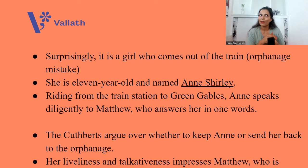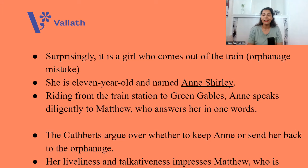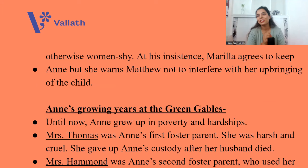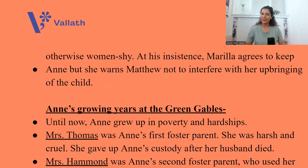When they reach home, Marilla is very confused: they had called for a boy, and here is a girl. The Cuthbert siblings argue over whether to keep Anne or send her back to the orphanage. But Anne's liveliness and talkativeness impresses Matthew so much that, at his insistence, Marilla agrees to keep Anne. However, she warns Matthew not to interfere with her prim and proper upbringing of the child — she is that stoic person who will make Anne duty-bound.